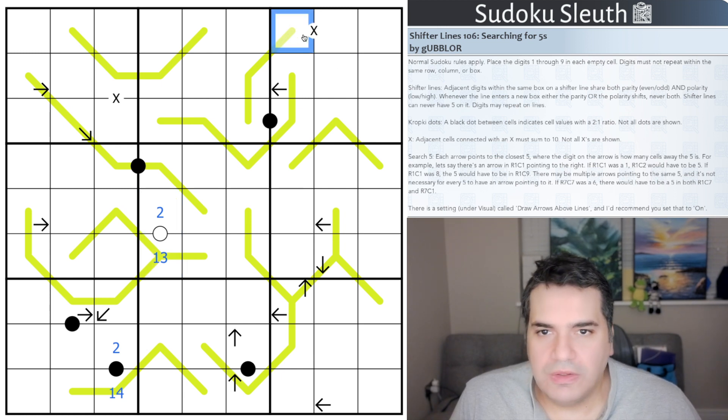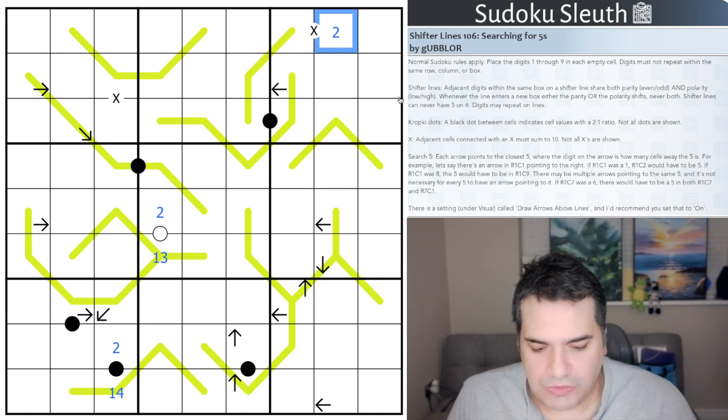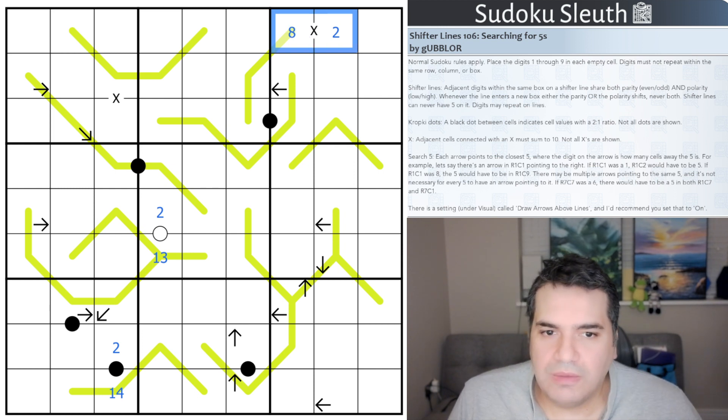We also have the X's, we can see one X, two X, I think this is all I can see right now. It means that these two cells that are joined by an X must sum up to 10. That means if this is a cell that is two, this would have to be an eight so that these two cells add up to 10.